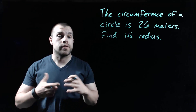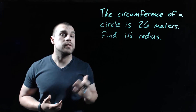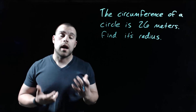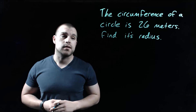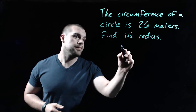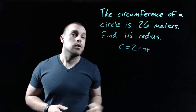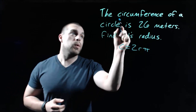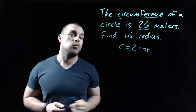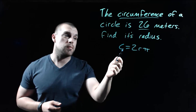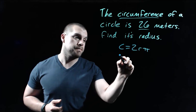In this example we're told that the circumference of our circle is 26 meters, and what we want to do is work backwards to figure out what its radius length is. Here's our circumference formula. We know that our circumference is 26 meters, so I'm going to plug that in on the left-hand side for our C value.